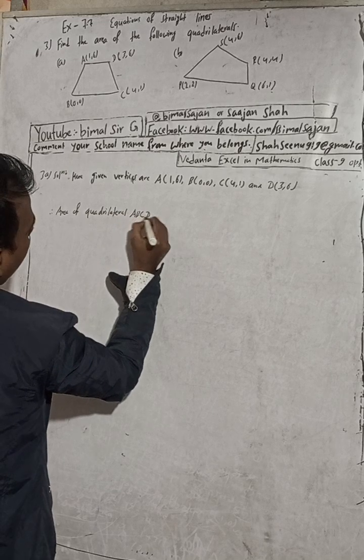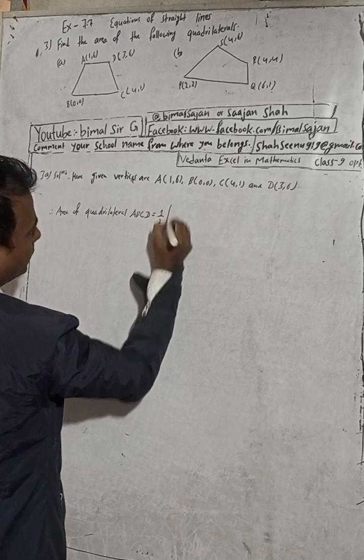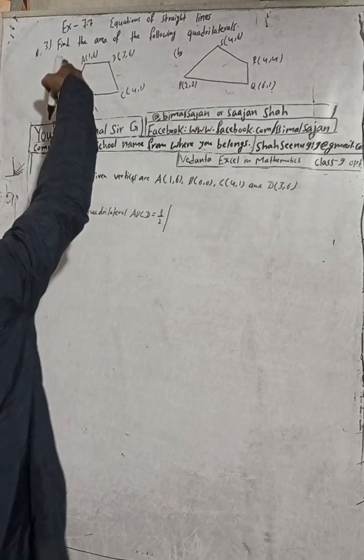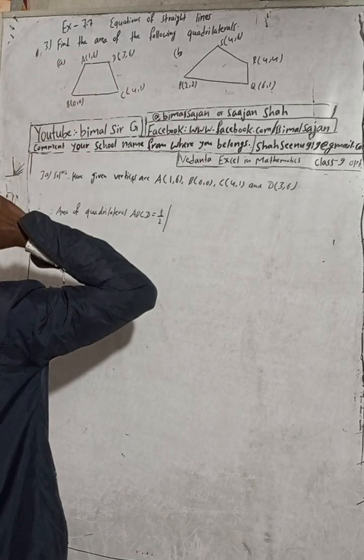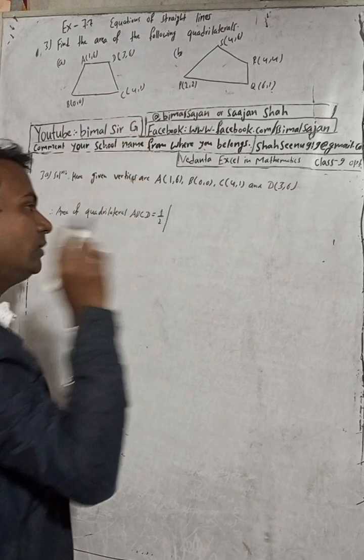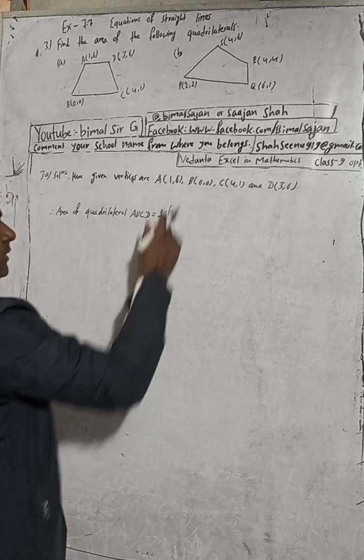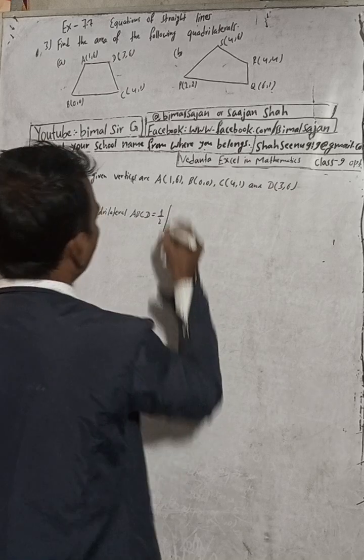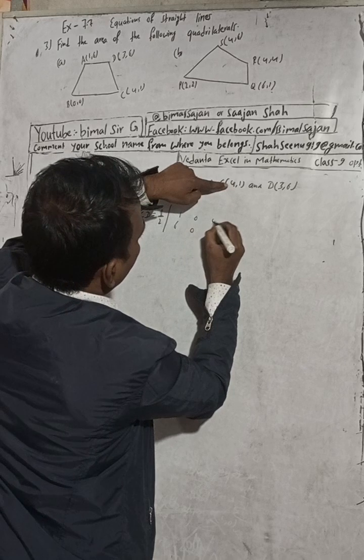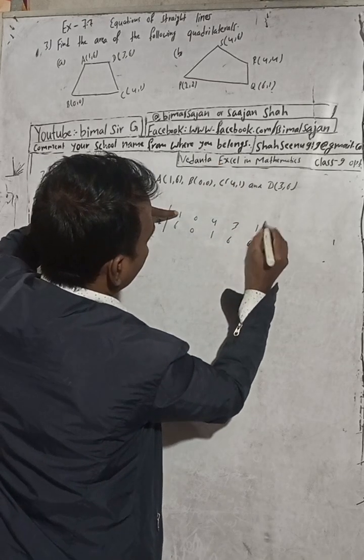So area of quadrilateral ABCD is equal to half. We can see that the points are written in anti-clockwise order, so obviously this value will be positive. The area is going to be positive.